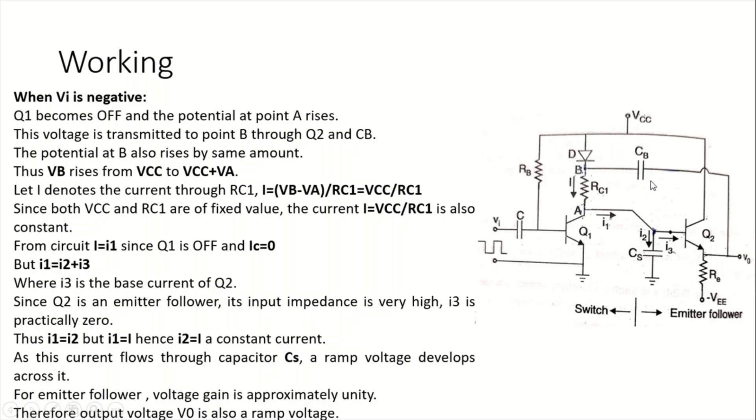This potential at CB also rises to the same amount. Previously the voltage at this potential was VCC. Now as VA is increasing, we find an increase in the potential of VB. VB becomes VCC plus VA. Let us say the current flowing through this circuit. As Q1 transistor is OFF, we find an open circuit here and this current I directly flows to I1.